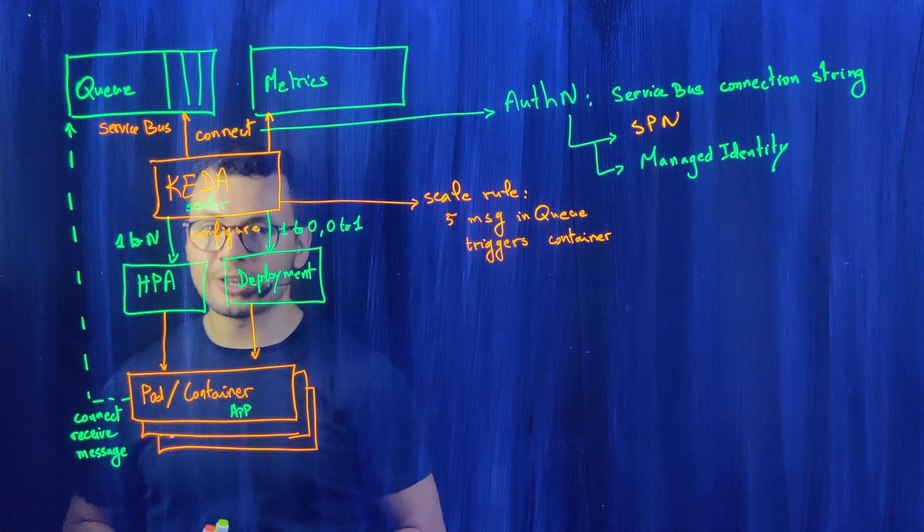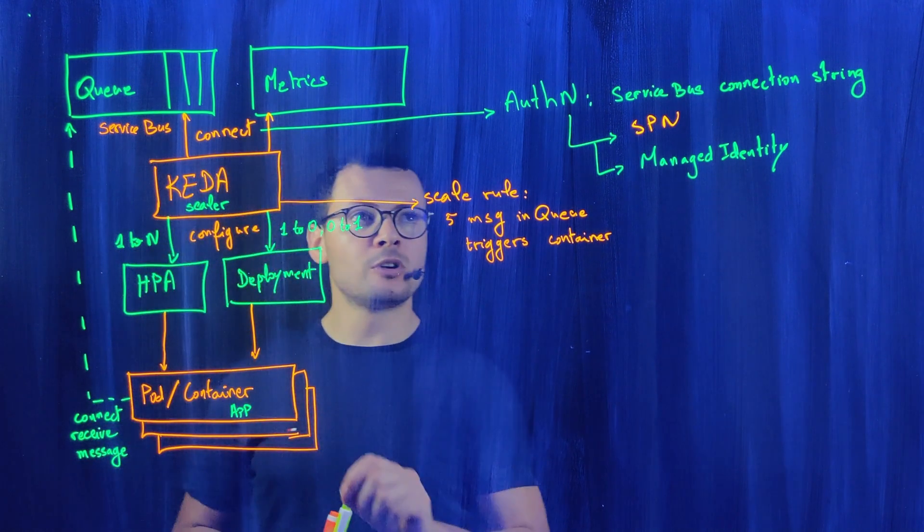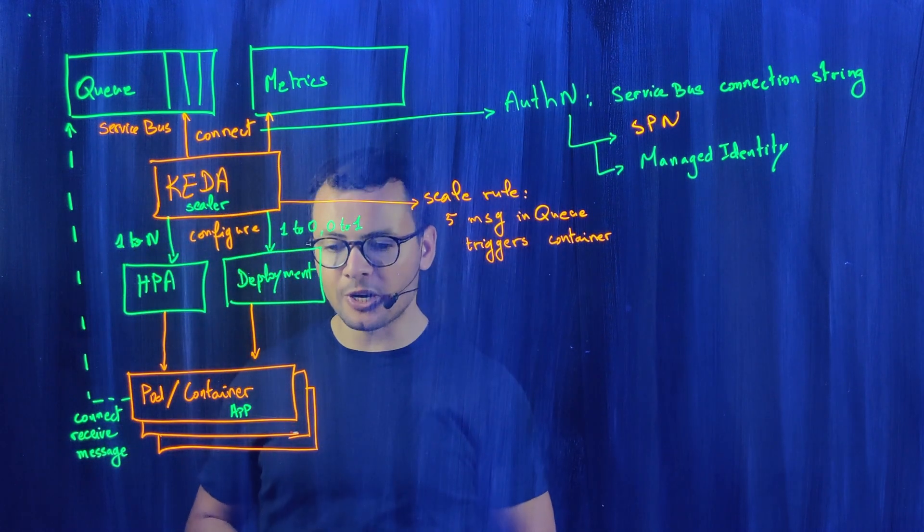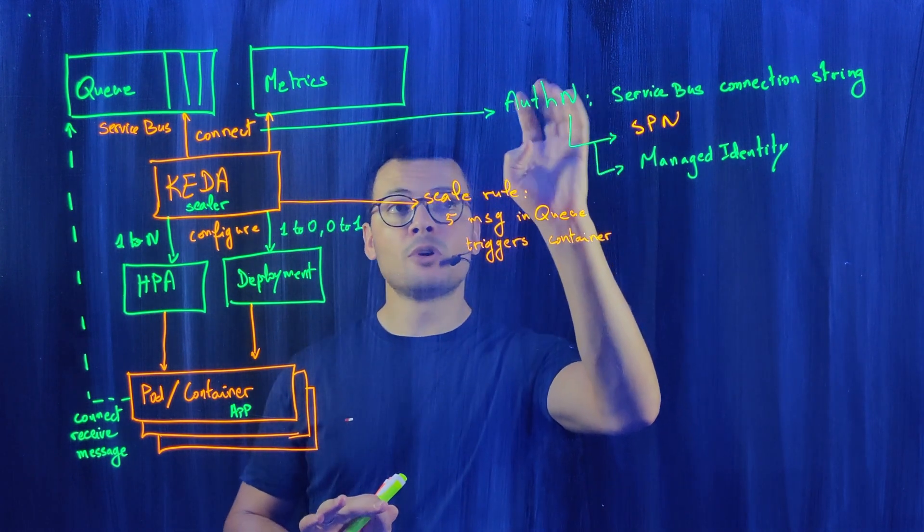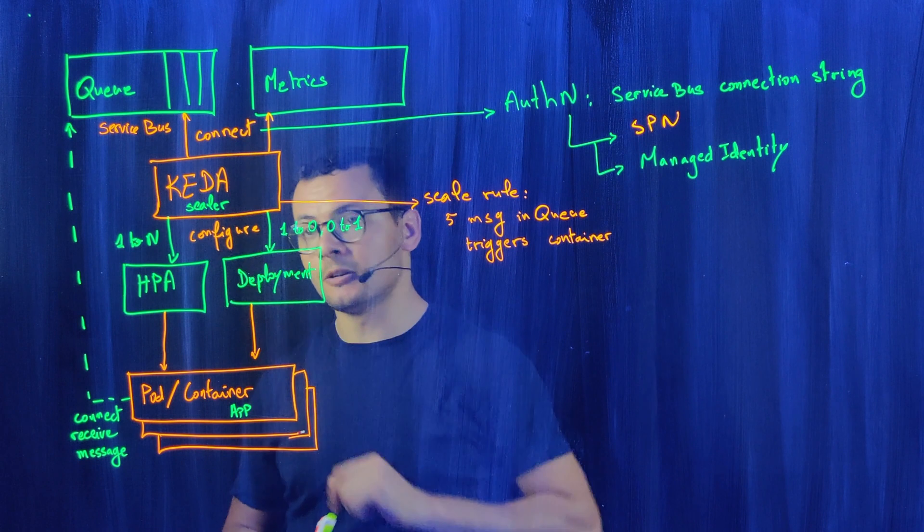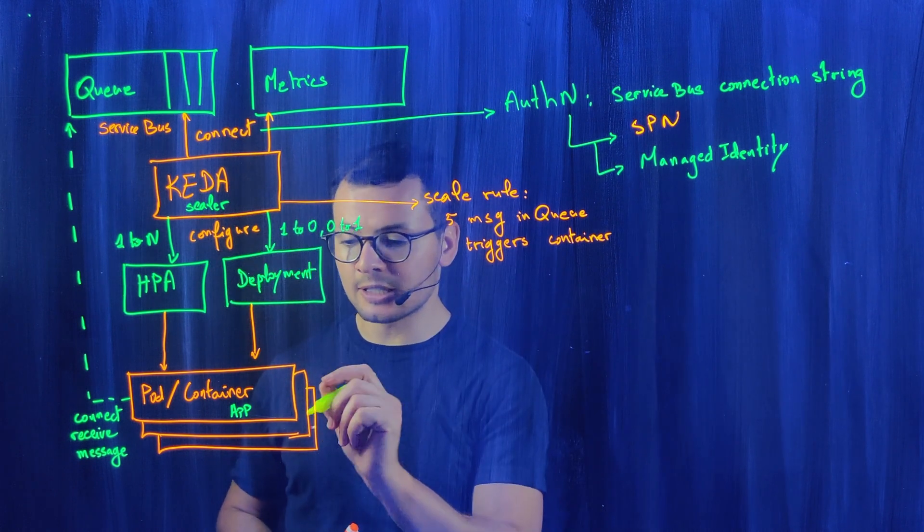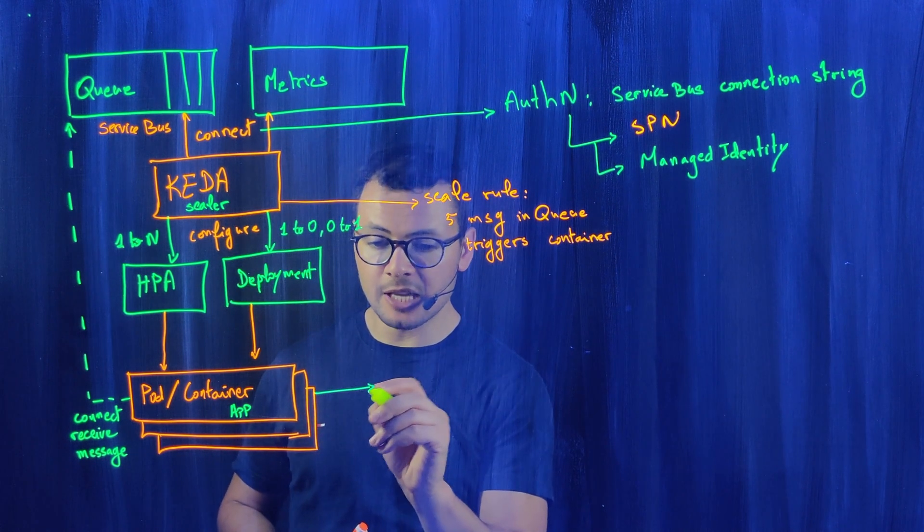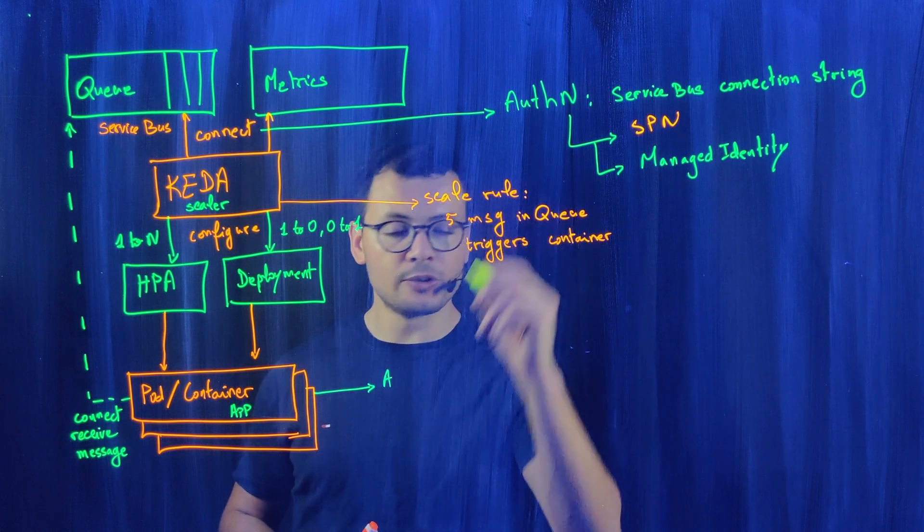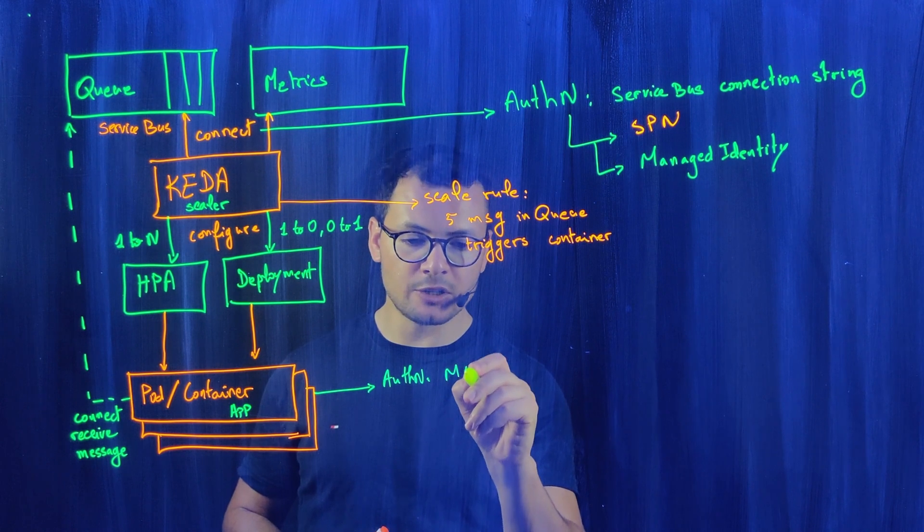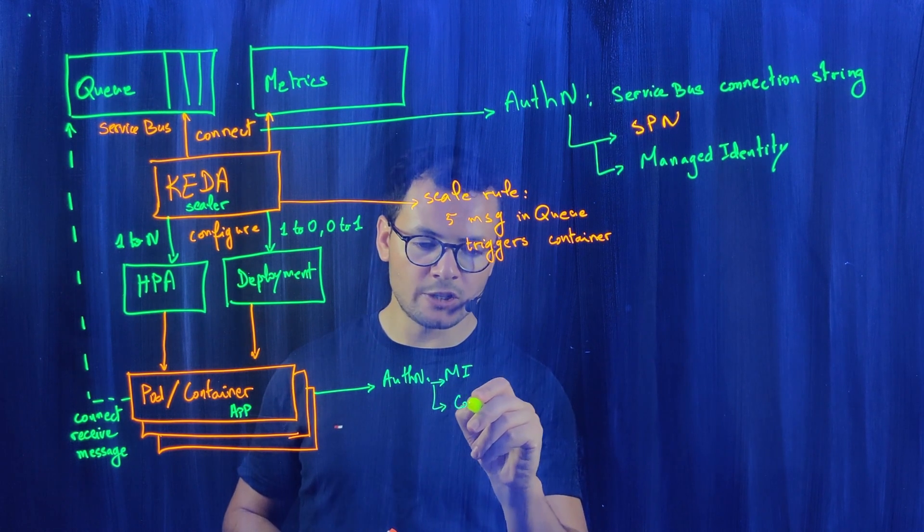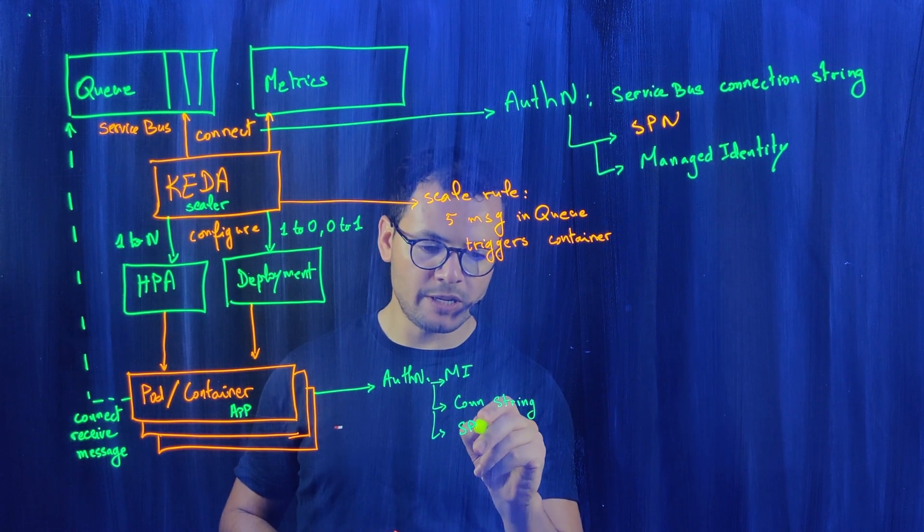For this workload to be able to connect to that queue again, it will perform an authentication operation. This authentication is totally independent from the authentication of KEDA. But it will still be able to use the same authentication options. It could use either a managed identity, connection string, or an SPN.